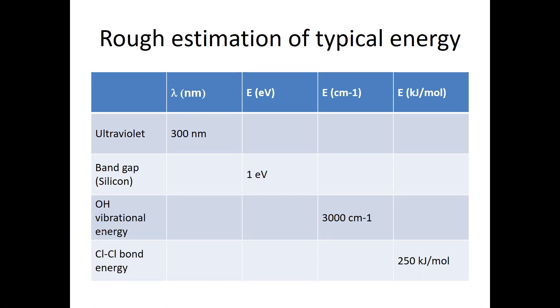The key things I want to emphasize is, I want you to know how big or how small the number is for in different energy unit. In the ultraviolet of 300 nanometer in an electron volt, it's like 33,000, which is quite larger number compared with OH vibrational energy.